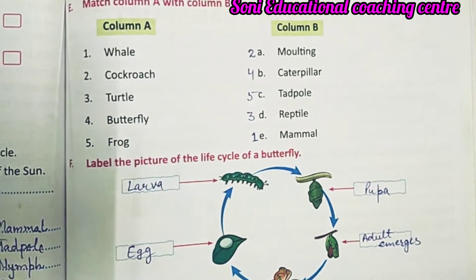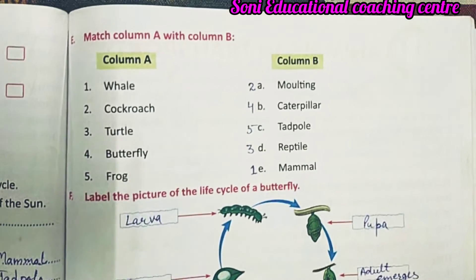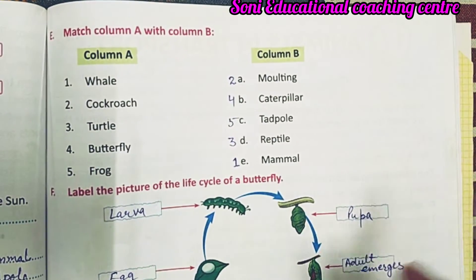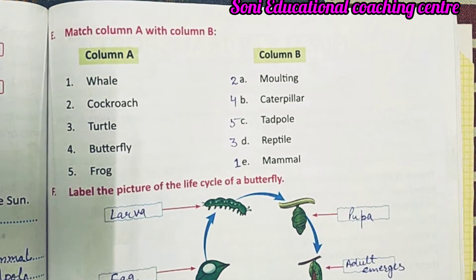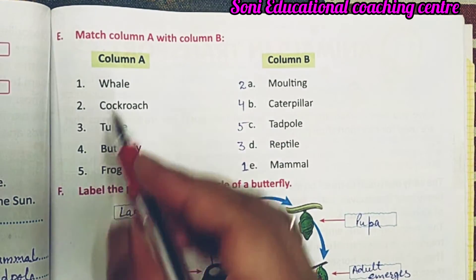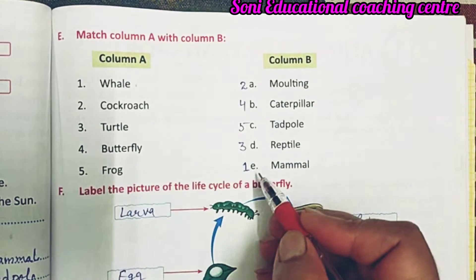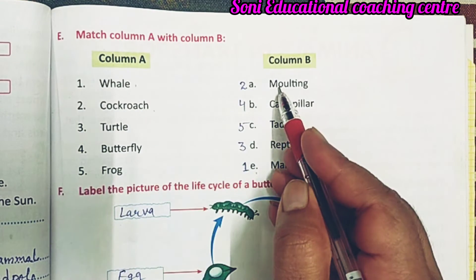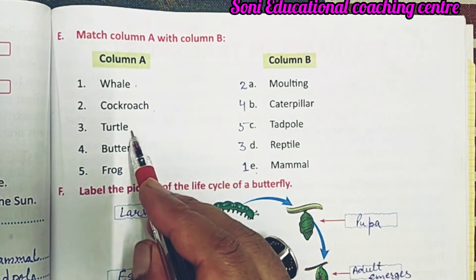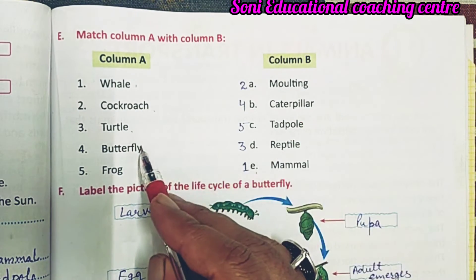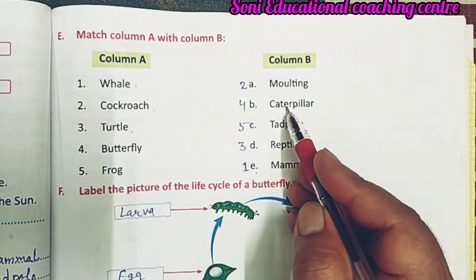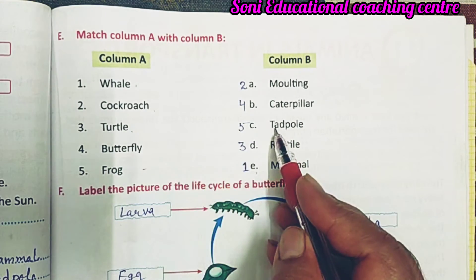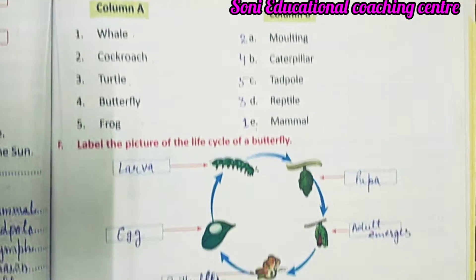Match the column: whale — mammal; cockroach — molting; turtle — reptile; butterfly — caterpillar; frog — tadpoles.